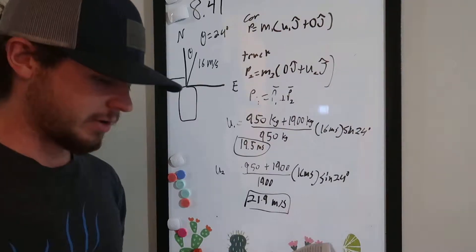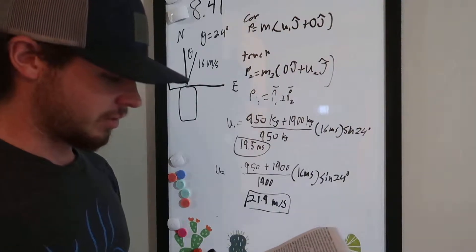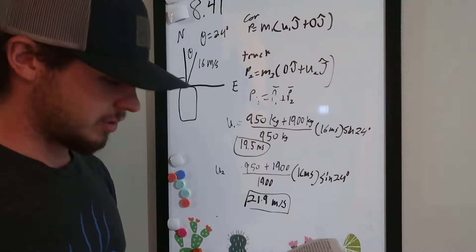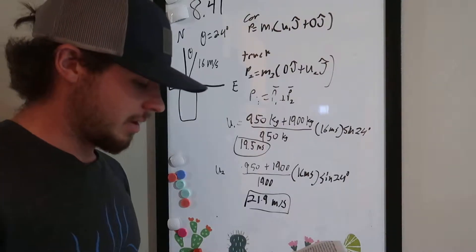Calculate the speed of each vehicle before the collision. The collision occurs during a heavy rainstorm. Ignore friction forces between the vehicles and the wet road.